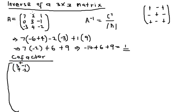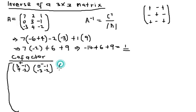For the second cofactor element, we eliminate the relevant row and column and are left with: 0, minus 1, minus 3, minus 2. We write that out: 0 times minus 2 minus minus 1 times minus 3 gives zero minus three equals minus three. The sign here is negative, so C₁₂ = plus 3. For the third element: 0, 3, minus 3, 4 — giving zero times 4 minus 3 times minus 3 equals plus 9. The sign here is positive, so C₁₃ = 9.